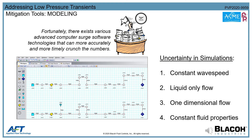So how are low pressure transients mitigated? First, they have to be properly identified. The two primary methods for predicting transient risk are computer surge modeling and transient pressure monitoring. There are two primary mathematical methods for calculating surge pressures: the method of characteristics and the wave plan method. Both require more computational effort than we have time for, even in quarantine. Fortunately, in 2020 there exist advanced computer software technologies that can more accurately and timely crunch the numbers and enable identification of effective mitigation strategies.